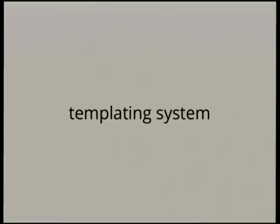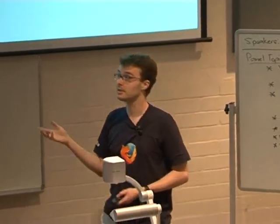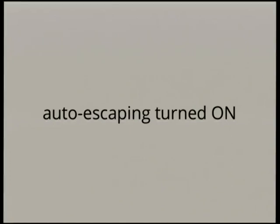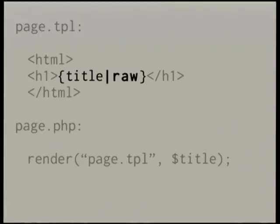But a much better solution is to use a templating system where you have a separate template with a placeholder, and then when you want to render the page, you pass in the variables there. The cool thing about a templating system is that you can turn on auto-escaping so that variables will always be escaped. And if you do want to pass in raw HTML, you have to explicitly pipe it as raw, or whatever it is in your templating system.